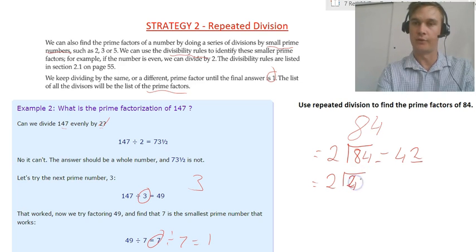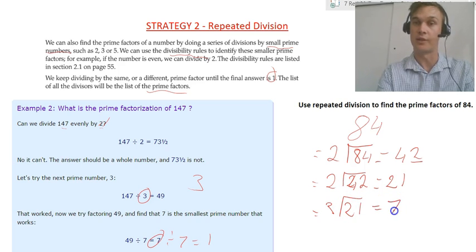Sorry, 2 divided by 42 equals 21. Now 21 is an odd number, so I know that the next one is not going to be 2. So I need to probably go 3. I know that 3 divided by 21 equals 7.